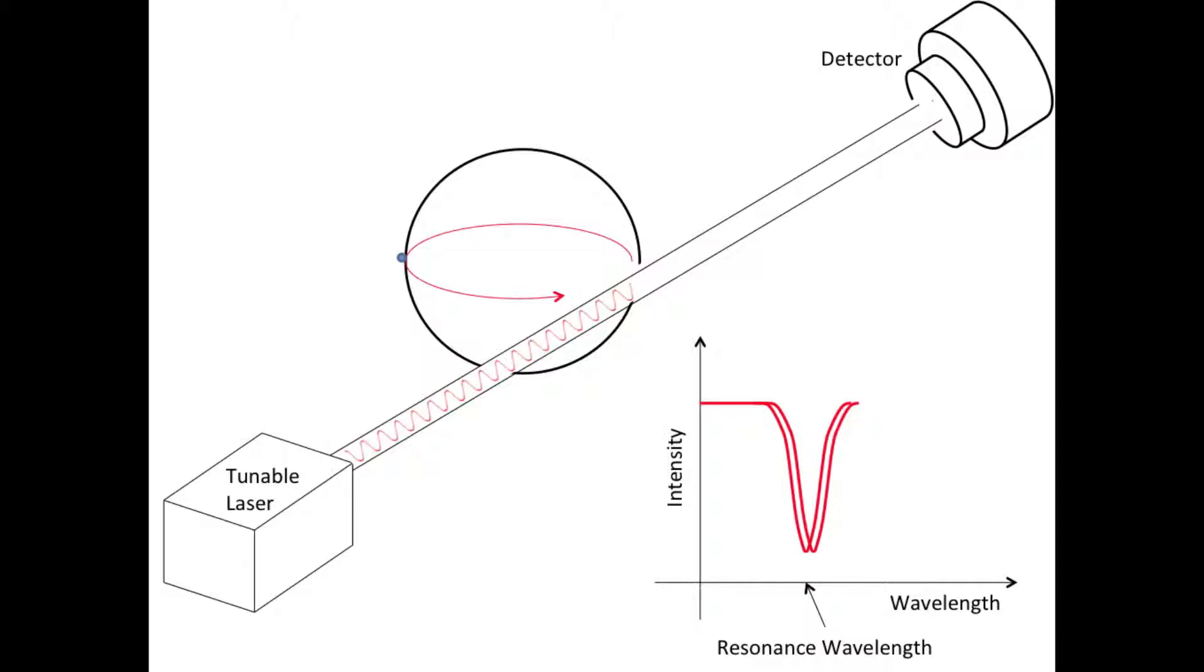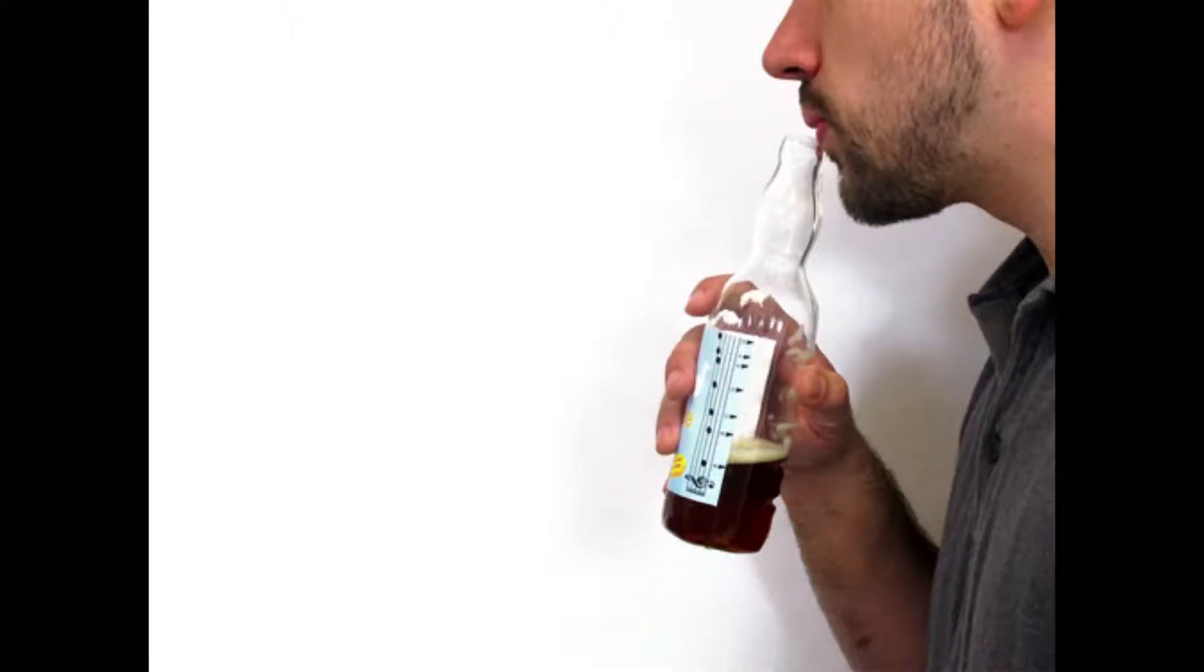To detect smaller things, like protein, we have to define a way to increase sensitivity. A glass sphere is just one type of resonator. Lots of things resonate. A common example is musical instruments, which can actually be represented by the same graph as the sphere.